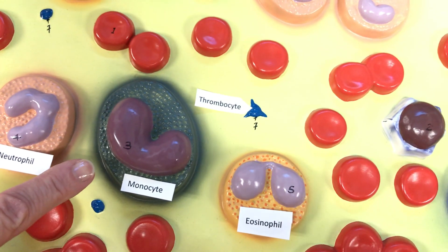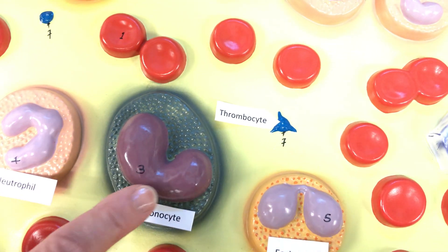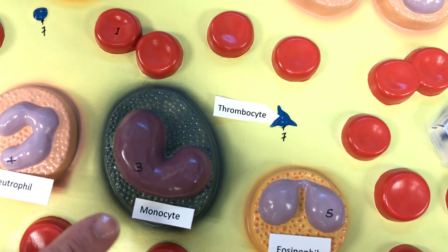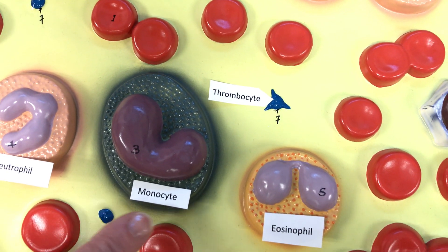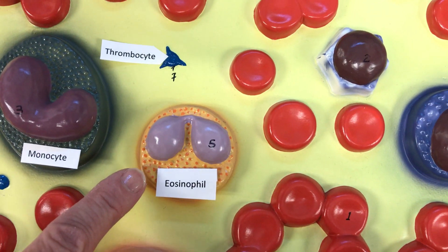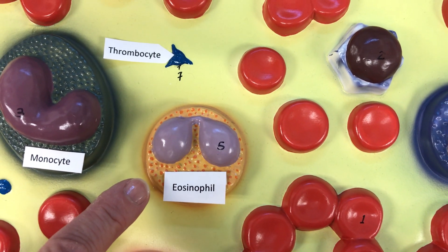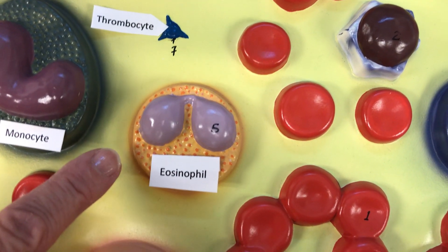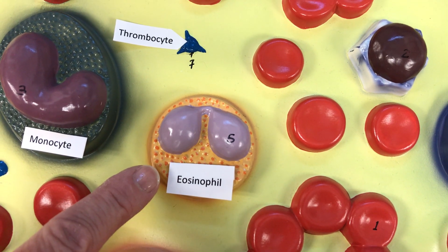Monocytes have a horseshoe-shaped nucleus and monocytes become macrophages. Eosinophils are effective against parasitic worms and they have hot pink granules in the cytoplasm.